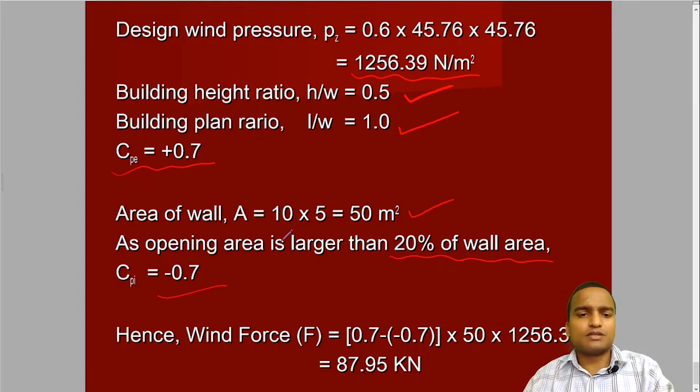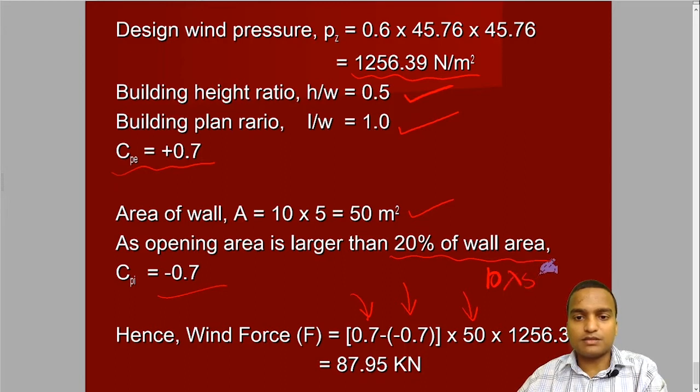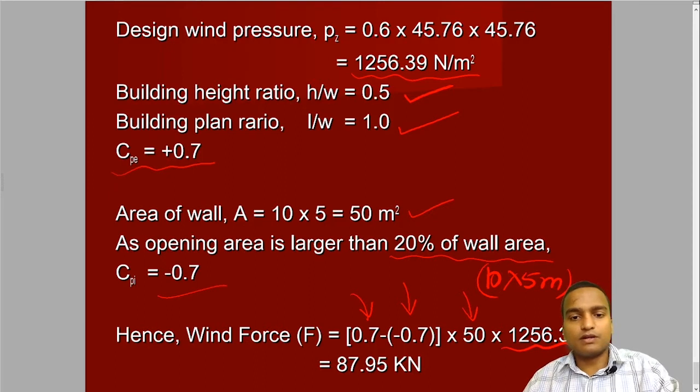And then we just put these two values CpE minus Cpi and then area of the exposed wall, which is equal to 10 meter into 5 meter. And then this is the Pz and then we get the wind load finally equal to 87.95 kilo Newton.